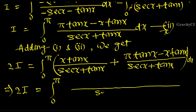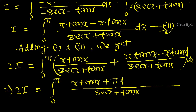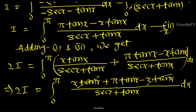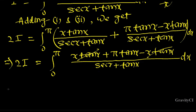The denominator becomes sec x + tan x, and the numerator becomes x·tan x + π·tan x - x·tan x. The x·tan x terms cancel, so 2I equals integral from 0 to π of π·tan x / (sec x + tan x) dx. Since π is a constant, take it outside.